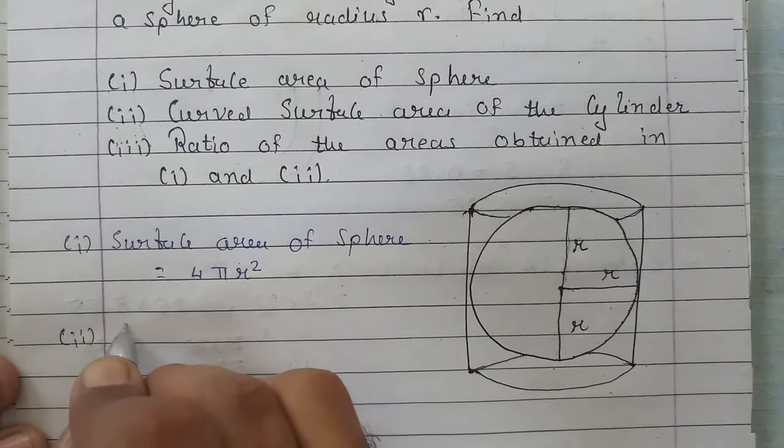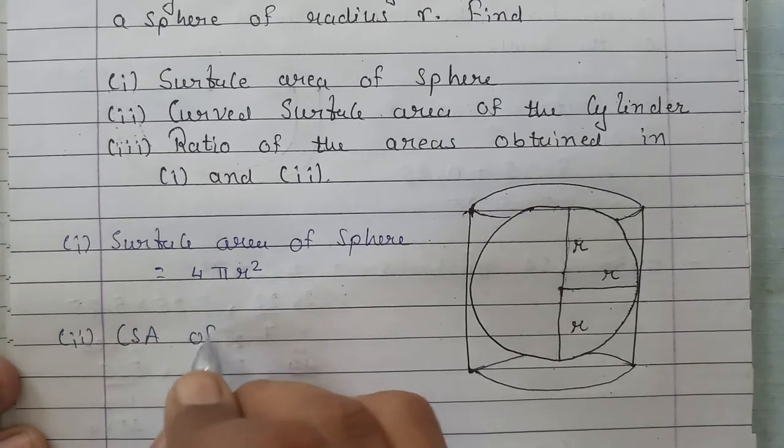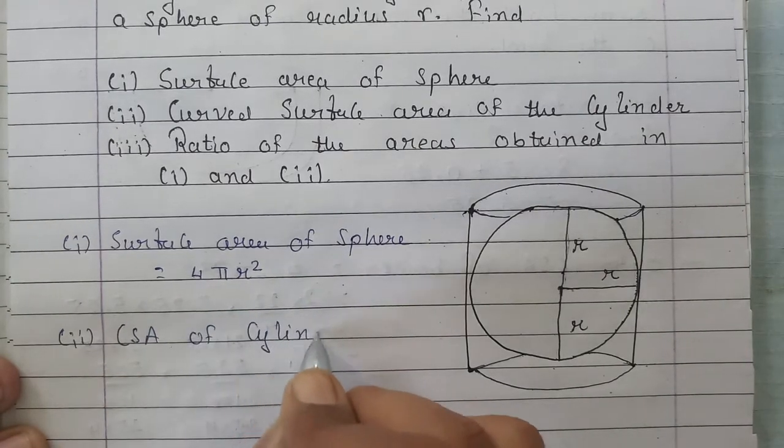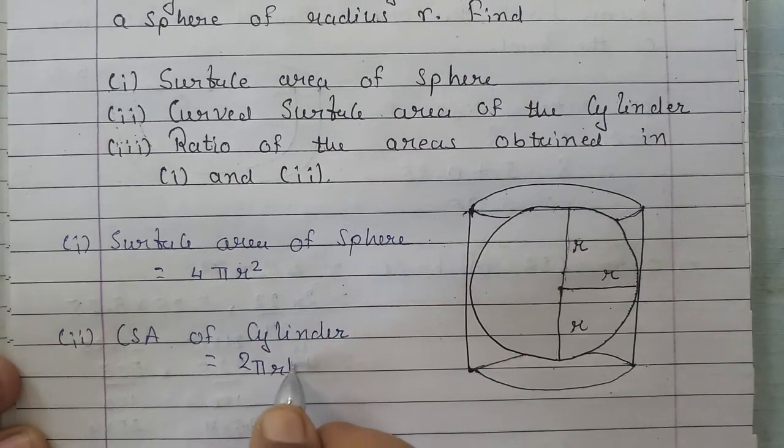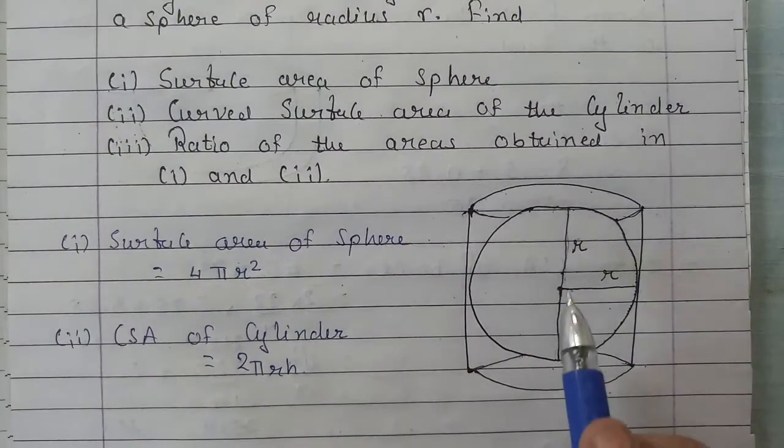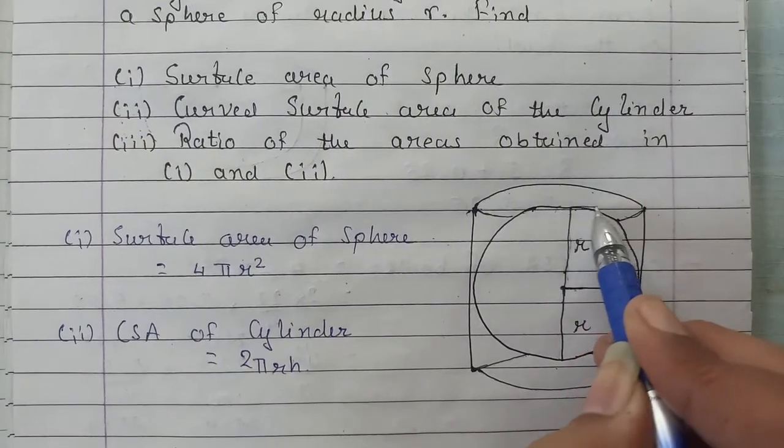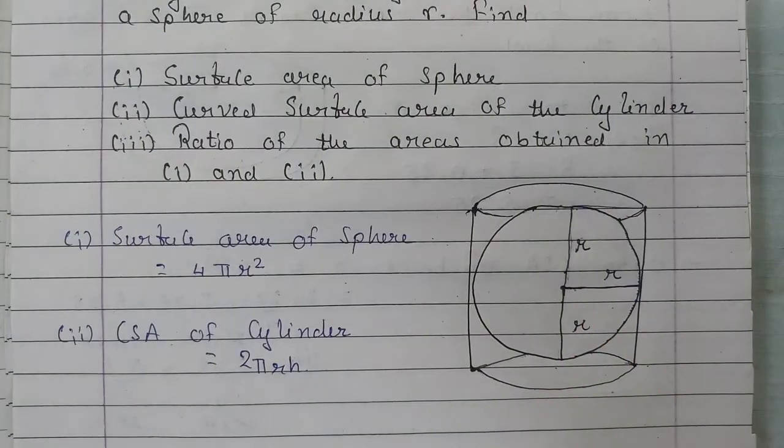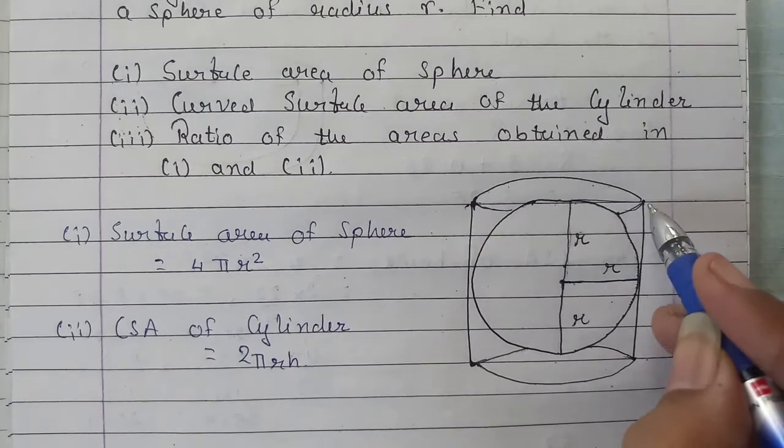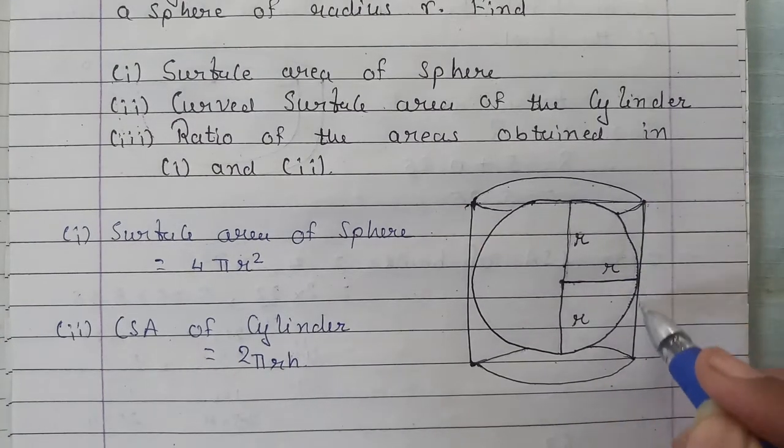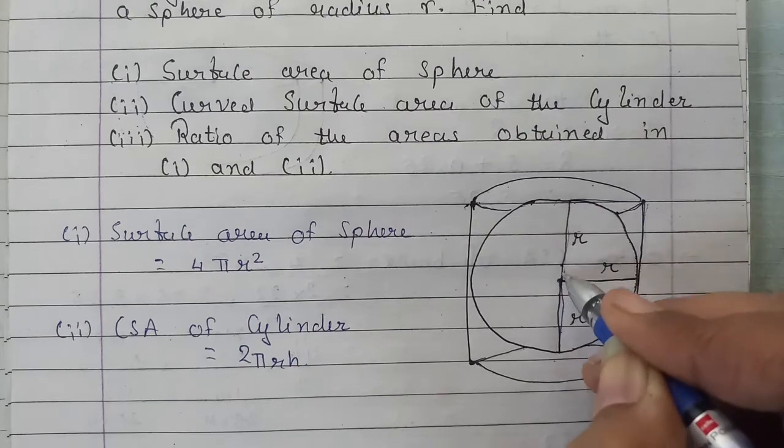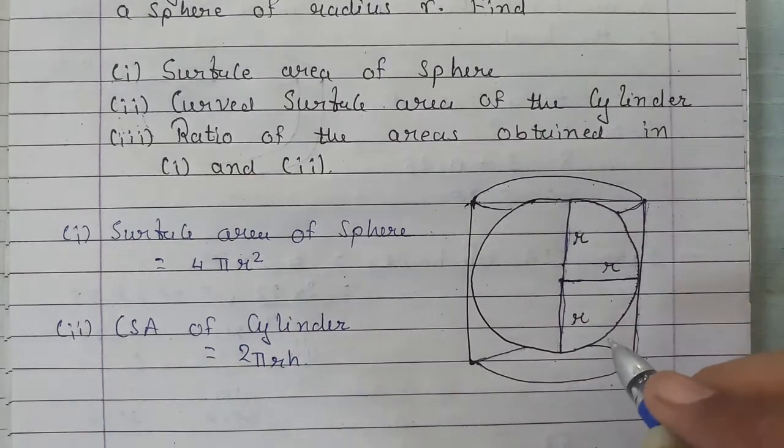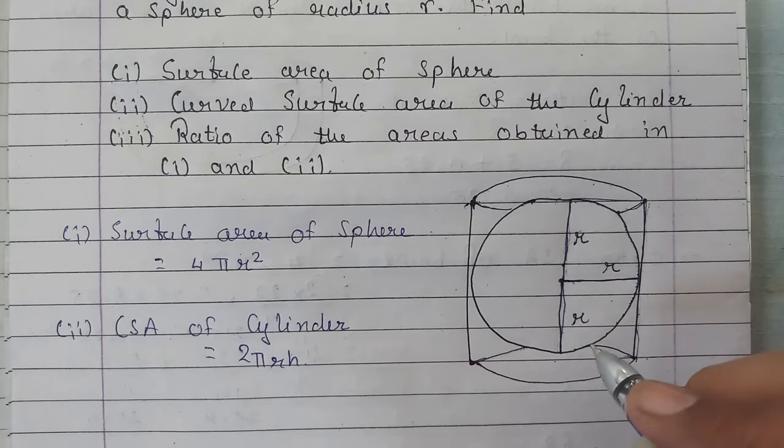Next we need to find curved surface area of cylinder. The formula will be 2 pi r h. See, the sphere's radius will be the same as the cylinder's radius. And the cylinder's height, which is this much, will be radius plus radius, that is the diameter of the sphere, which is 2 times radius.